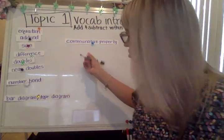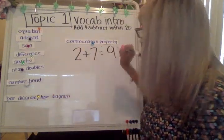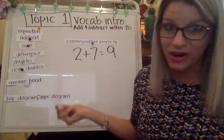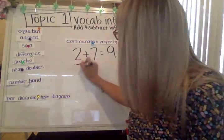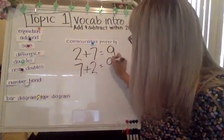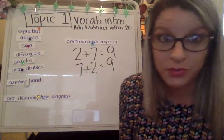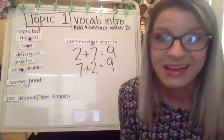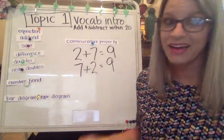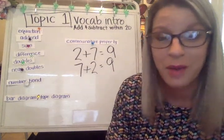So I could say two plus seven equals nine, or seven plus two equals nine — that's because of the commutative property. That's just a little added extra that hopefully you can remember.